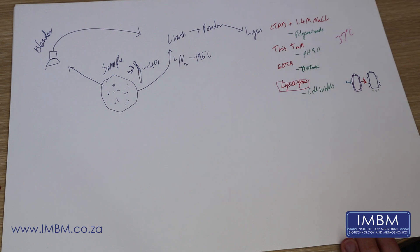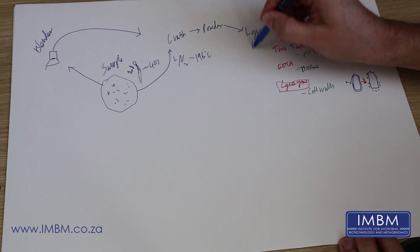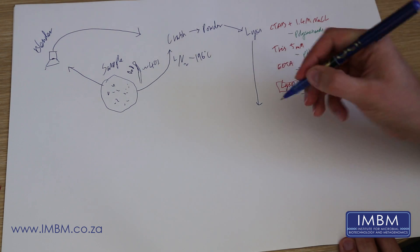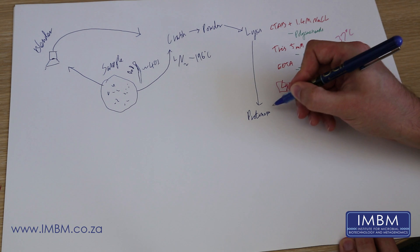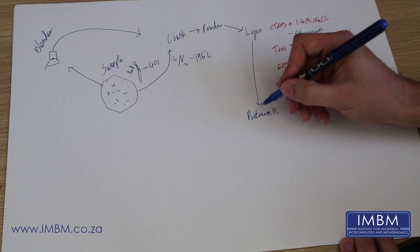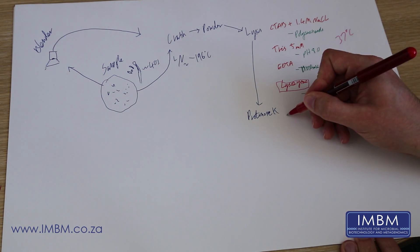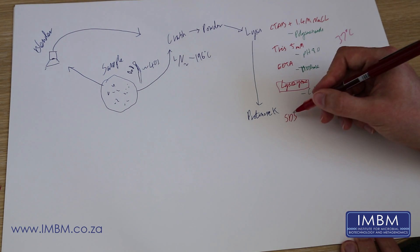The next step from lysozyme is to add the proteinase K. Proteinase K is another protein, but it's a much more robust protein than any of the others that we're adding. It's just very robust, and this protein can work in the presence of SDS, sodium dodecyl sulfate.